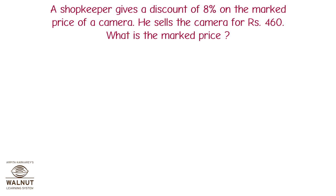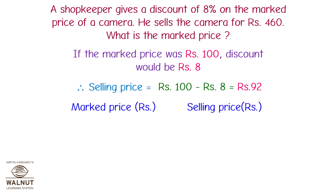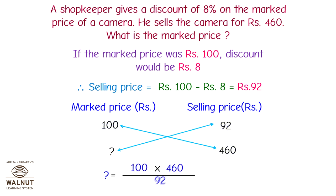A shopkeeper gives a discount of 8% on the marked price of a camera and sells it for Rs. 460. What is the marked price? If the marked price was Rs. 100, the discount would be Rs. 8 and the selling price would be Rs. 100 − Rs. 8 = Rs. 92. By cross multiplication: if the selling price is Rs. 92 the marked price is Rs. 100, so if the selling price is Rs. 460, the marked price is 100 × 460 / 92 = Rs. 500. The marked price of the camera is Rs. 500.